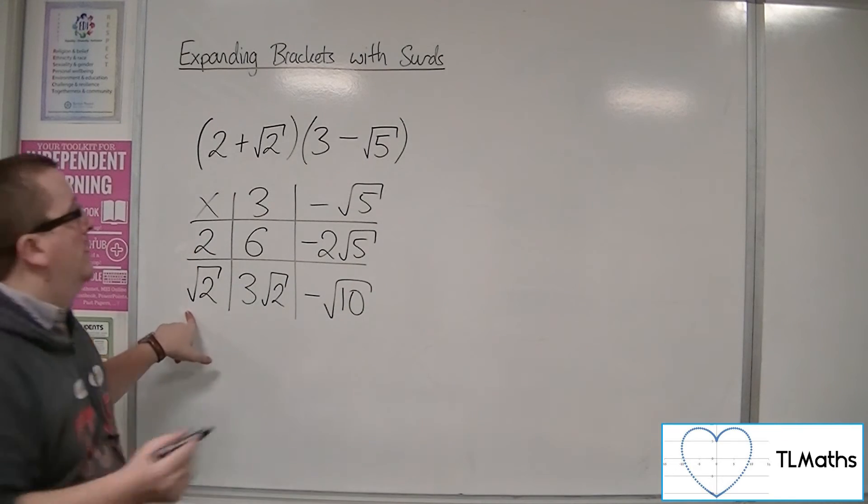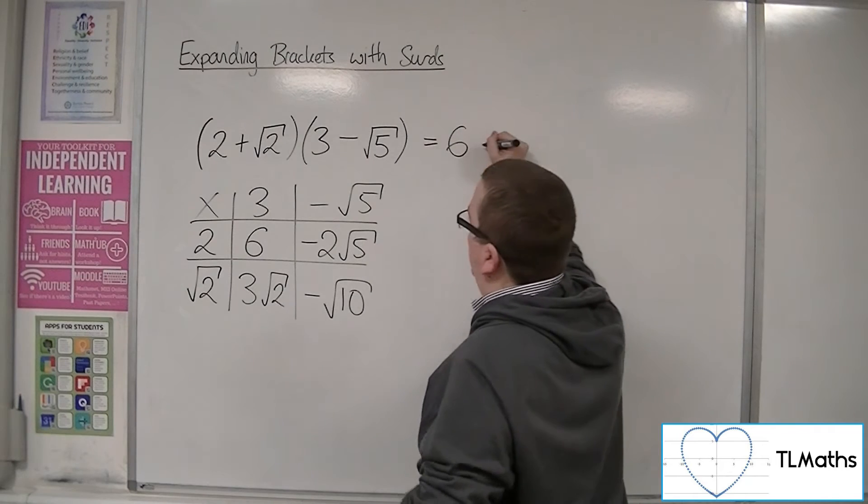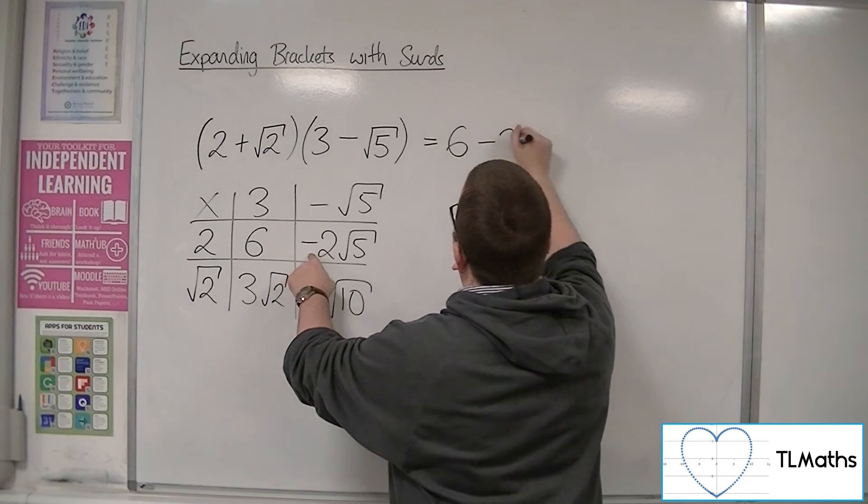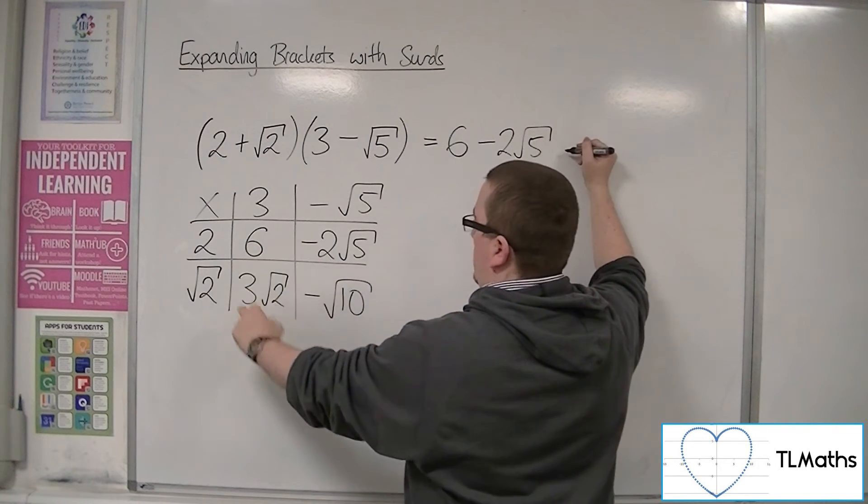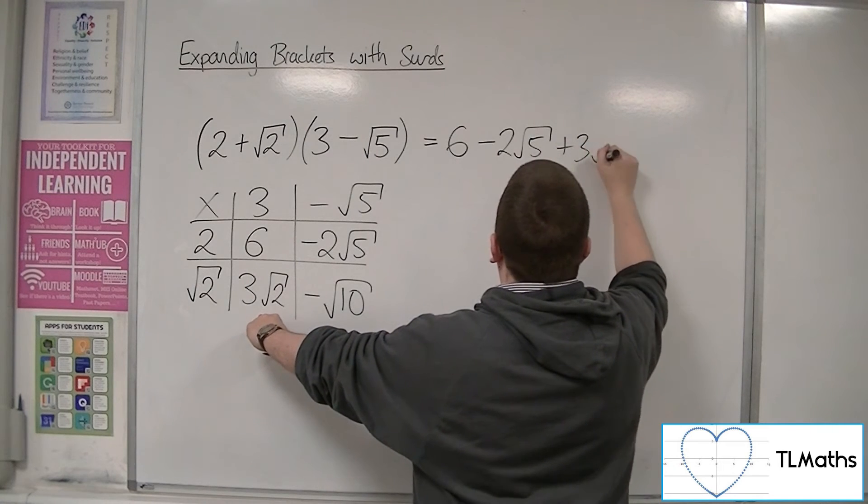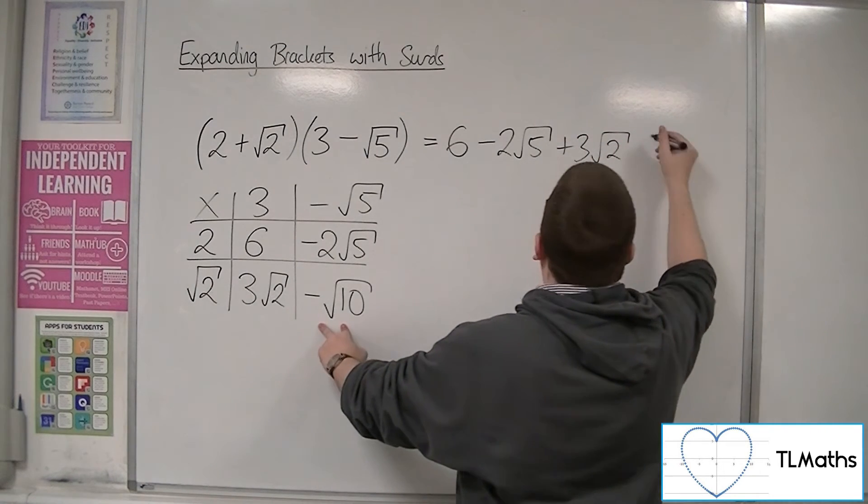And so this is equal to 6 take away 2 root 5 plus 3 root 2 take away root 10.